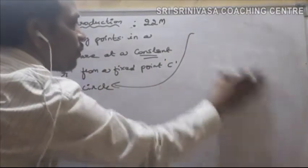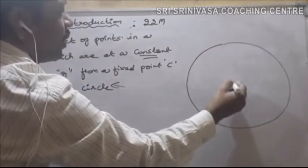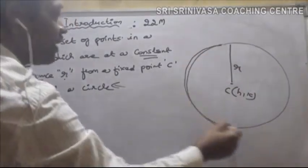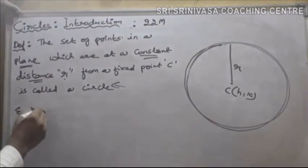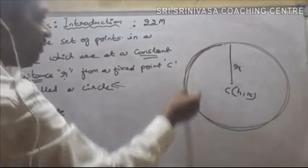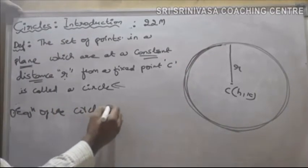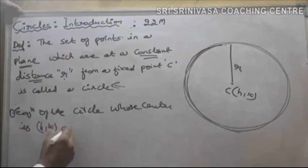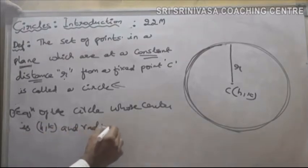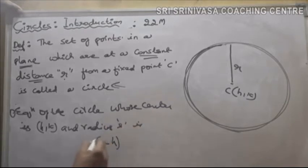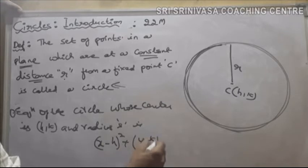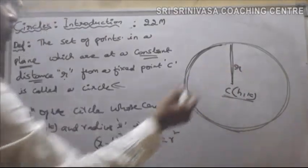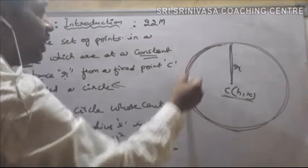Now if the center of the circle is (h, k) and the radius of the circle is R, then the equation of the circle can be found using a formula. The equation of a circle whose center is (h, k) and radius R is: x minus h whole square plus y minus k whole square equal to R square. So if the center and radius R are given, you can use this formula to find the equation of the circle.